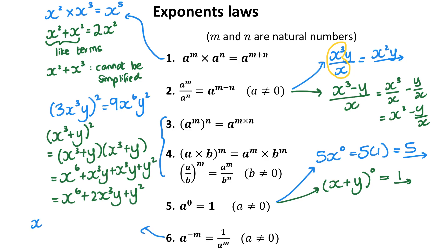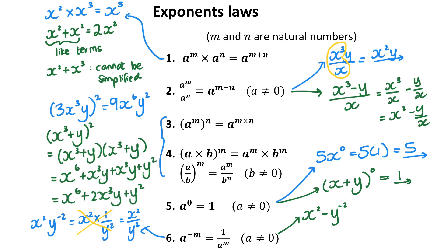Let's look at law 6. If you have x squared y to the power of negative 2, that means x squared times 1 out of y squared, which gives me x squared out of y squared. Most of the time people just know that because I've got a negative exponent, that y will be in the denominator with a positive exponent. However, you need to be careful when you are working with adding or subtracting. So if I have x squared minus y to the power of negative 2, that means the same as x squared minus 1 out of y squared. I'm not just putting y squared as the denominator of the whole thing.